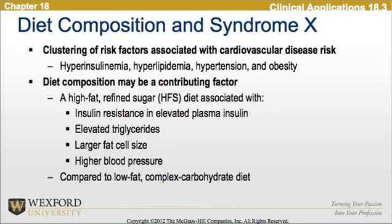Looking at dietary composition and syndrome X, we see a clustering of risk factors associated with cardiovascular disease risk, including hyperinsulinemia, hyperlipidemia, hypertension, and obesity. Diet composition may be a contributing factor. A high-fat, refined-sugar diet is associated with insulin resistance, elevated plasma insulin, elevated triglycerides, larger fat cell size, and higher blood pressure, compared to a low-fat, complex-carbohydrate diet.